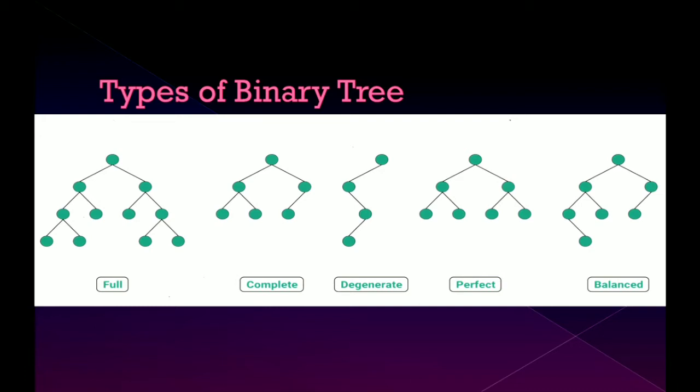Full binary tree is a binary tree in which every node has zero or two children. In complete binary tree, all levels are completely filled with nodes except the last level, and in the last level all nodes are left side as possible.